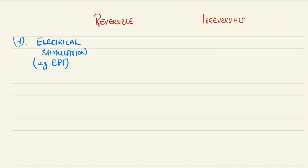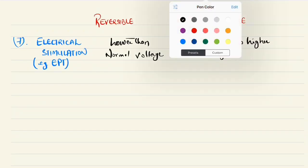The seventh category to identify the reversible and irreversible pulpitis is electrical stimulation, like we use the electrical pulp testers. Now if there is lower than normal voltage readings in the EPT then it is reversible. If it responds to higher voltage then it is irreversible.